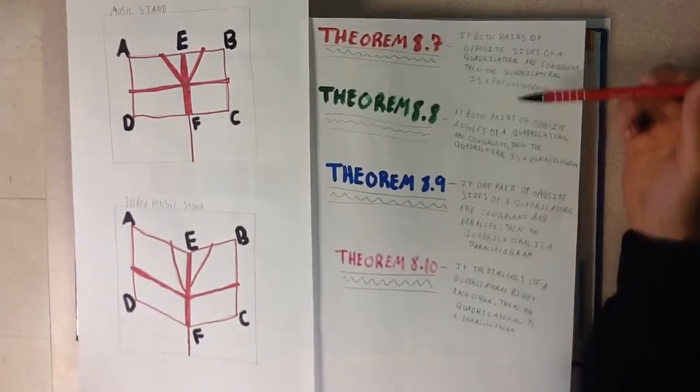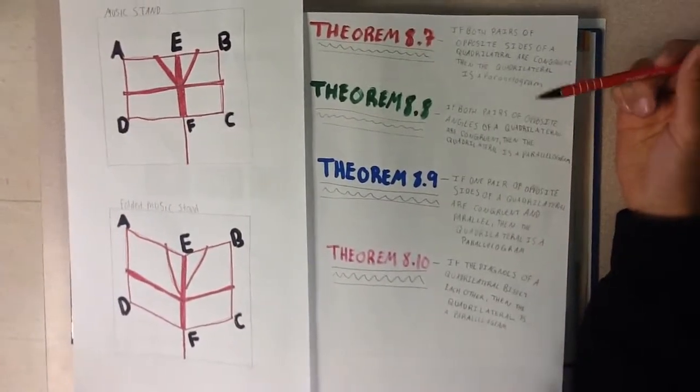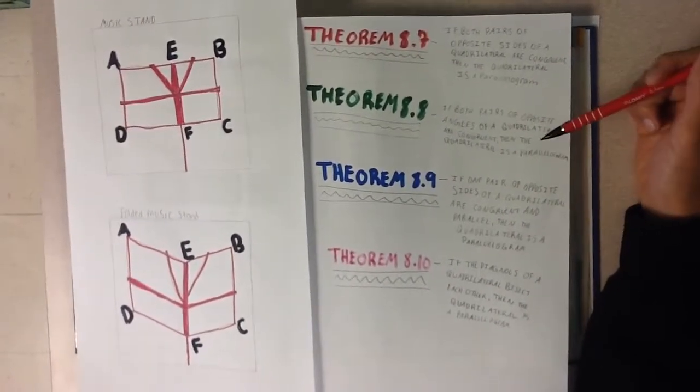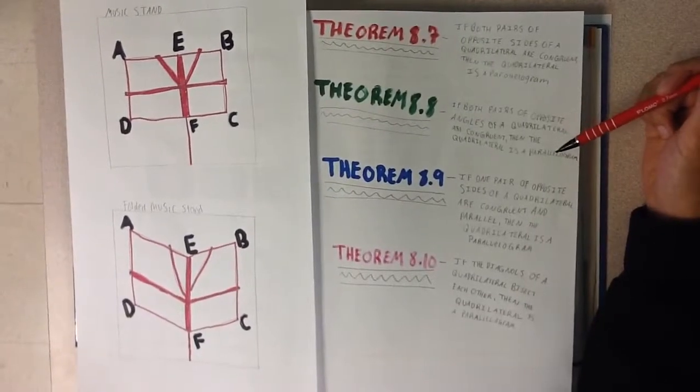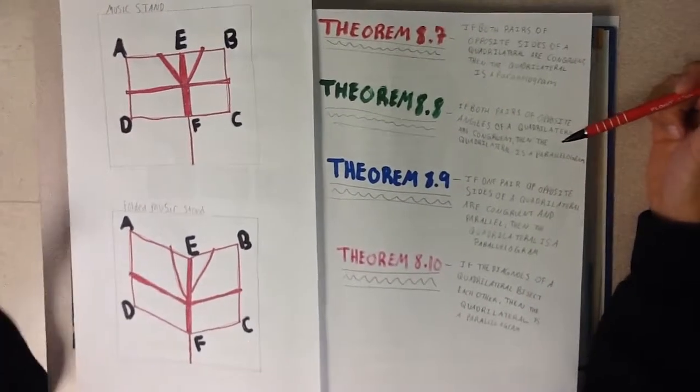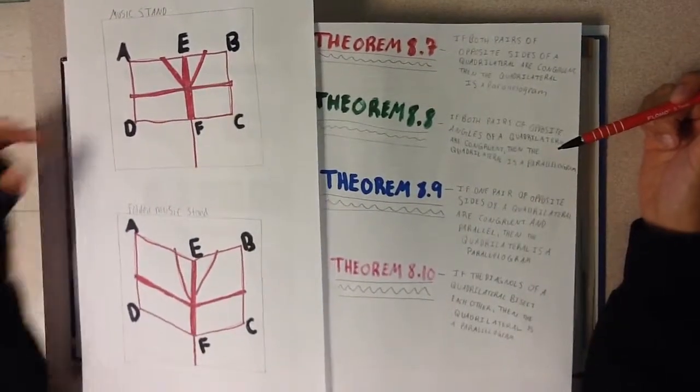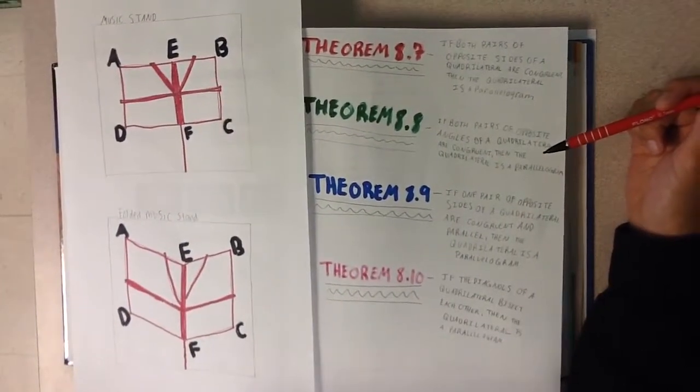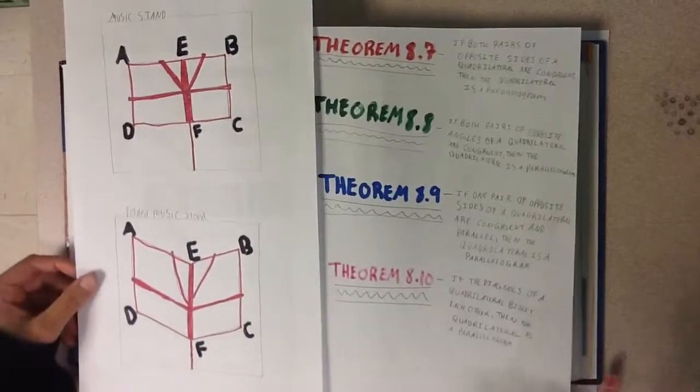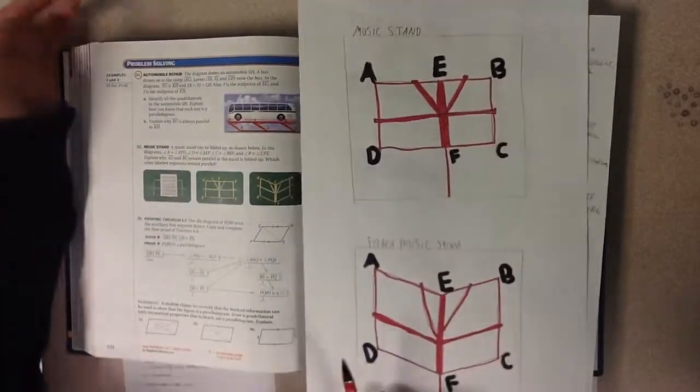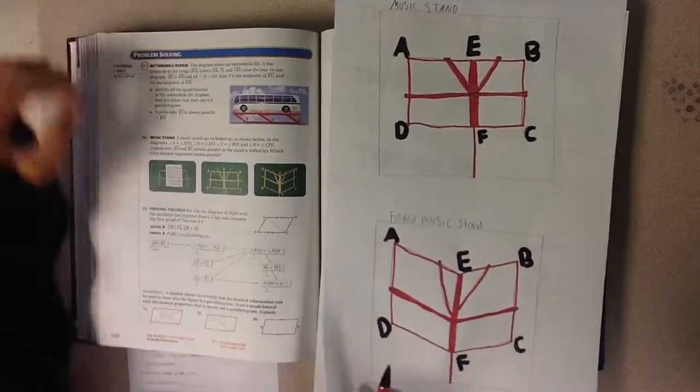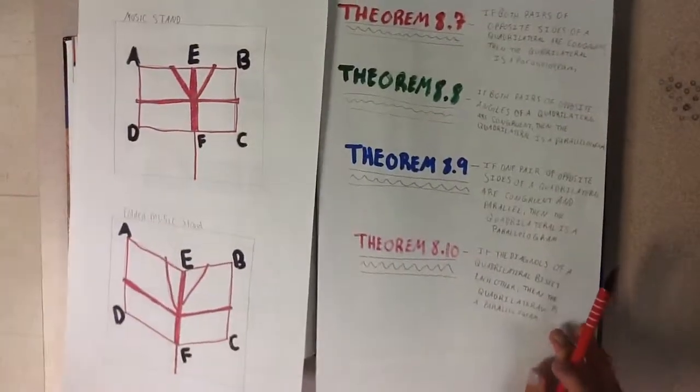Theorem 8.8 says that if both pairs of opposite angles of a quadrilateral are congruent, then the quadrilateral is a parallelogram. And this one does apply to both, because both pairs of the opposite angles of a quadrilateral are congruent, and that's what it says in the question, that's what they tell us. And then, I messed up.